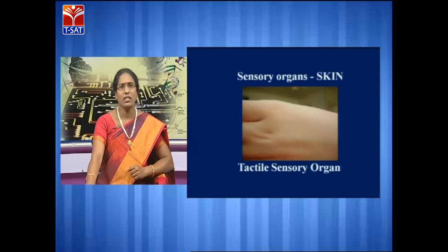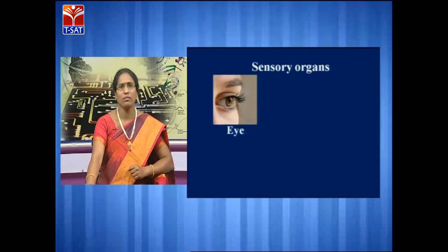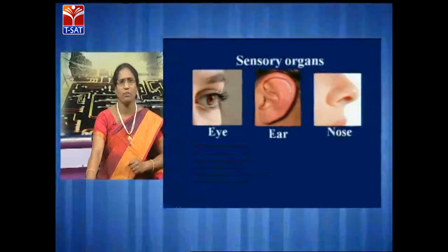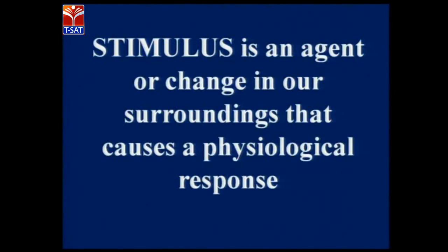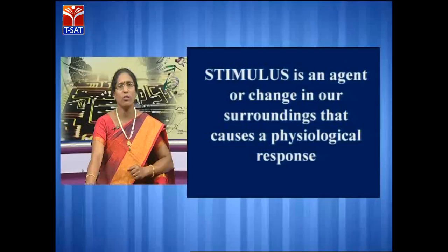Children, what are the different sensory organs we have in our body? Eye, ear, nose, tongue, and skin. These all sensory organs will help us to receive the changes. These changes which happen in our surroundings — or an agent responsible for creating a physiological response in our body — is called stimulus. Just a sensory organ is not sufficient to get the change from the surroundings; we need different organs to get involved in this pathway. Let me see with an example how the stimulus is received by our body and how we respond.